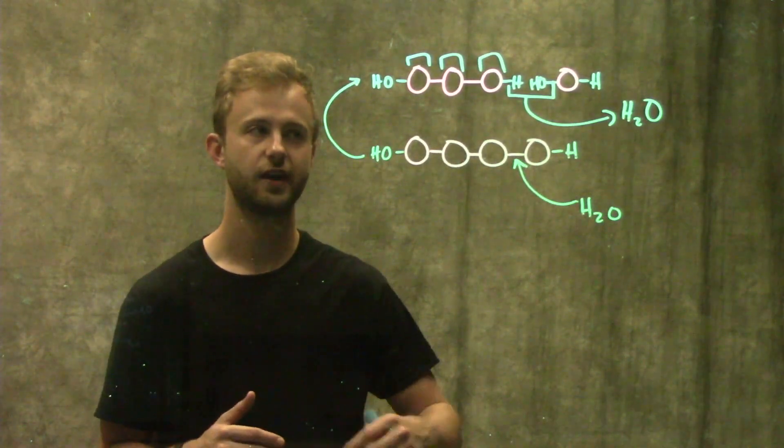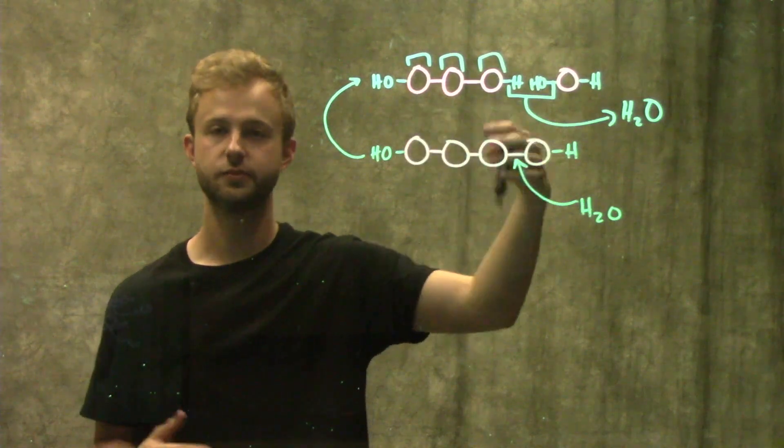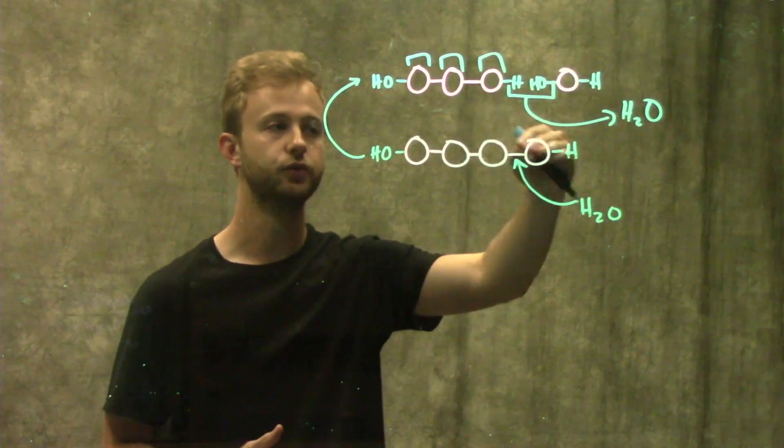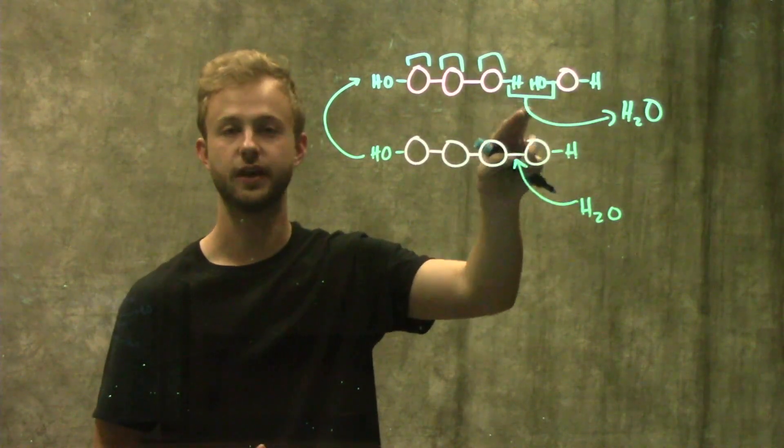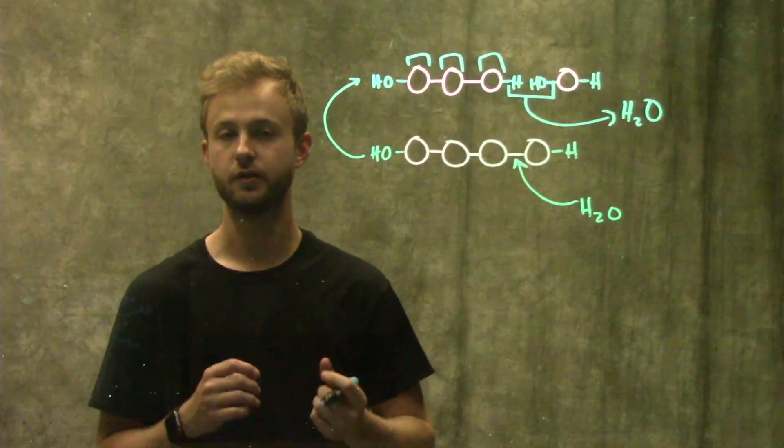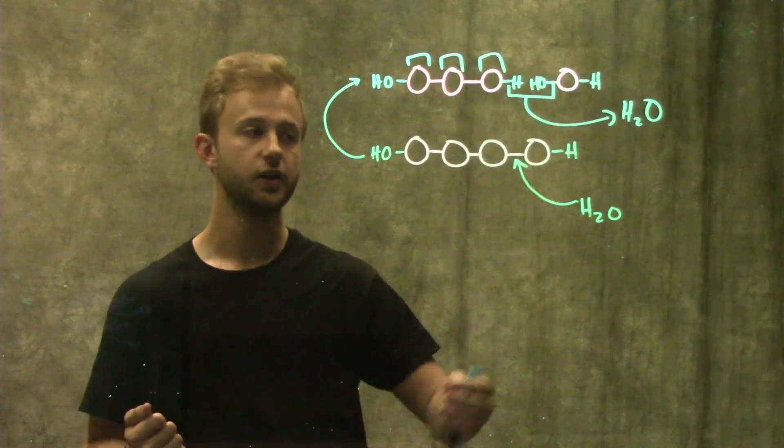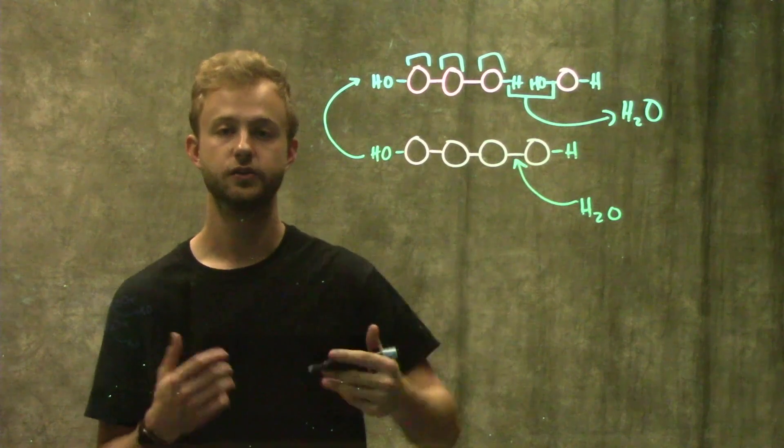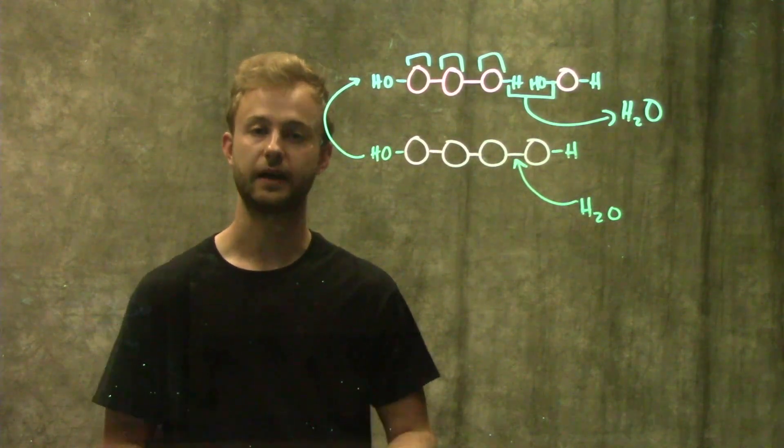Just to review one final time: to put monomers together to make a polymer, we do a dehydration synthesis or condensation reaction where you lose a water molecule to put two monomers together. To break a bond within a polymer and break it up into monomers, you do a hydrolysis reaction. You add a water molecule to that bond and break it apart back into its monomers.